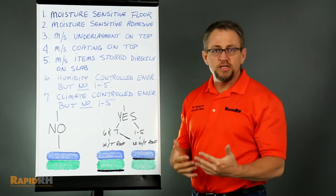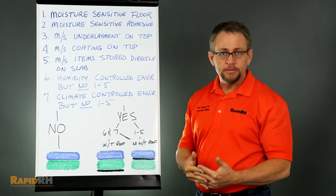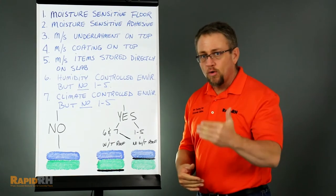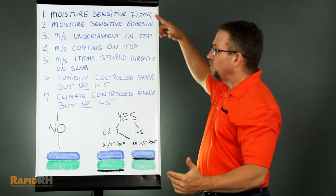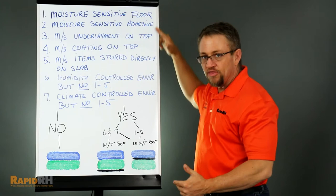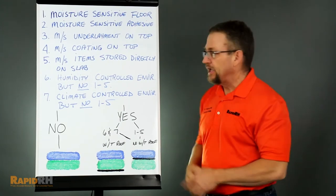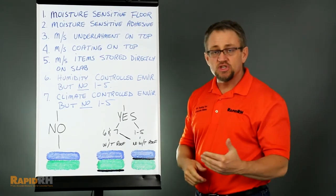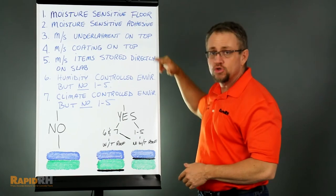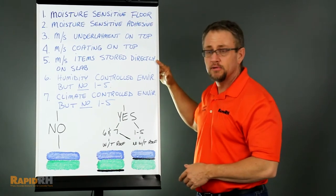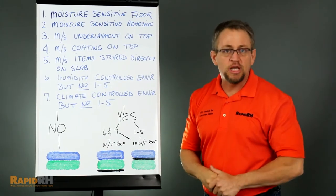And then you have number six, which is are there going to be humidity controls in the environment, and now or in the future, will there not be any one through five? And then seven, the same situation, now or in the future, no one through five, but are there going to be climate controls?